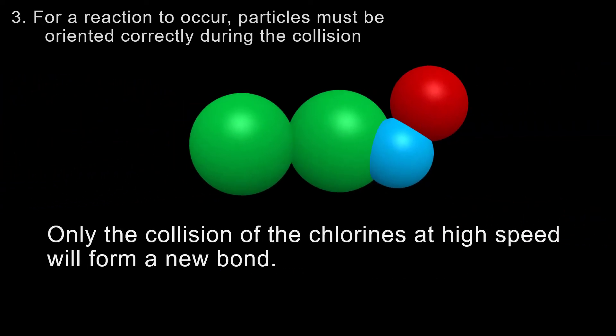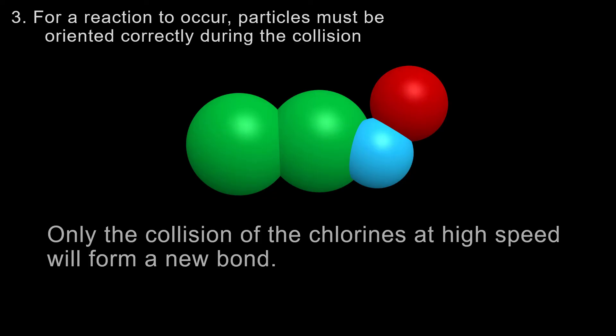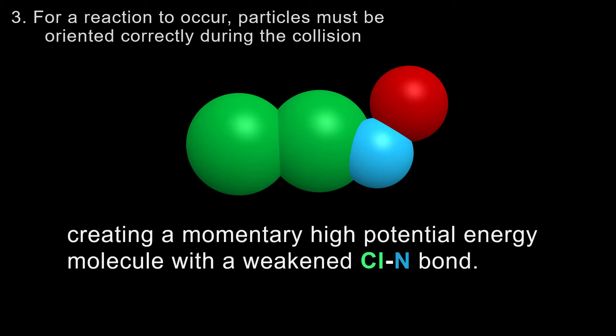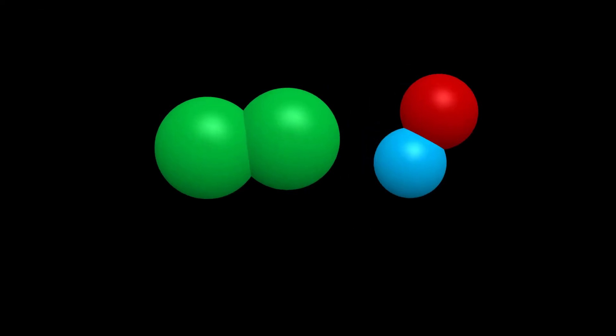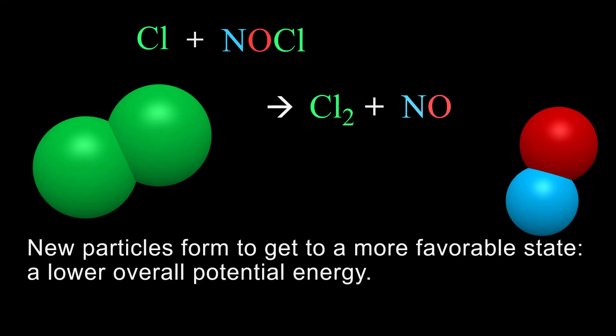Only the collisions of the chlorines at high speed will form a new bond, creating a momentary high potential energy molecule with a weakened chlorine-nitrogen bond, resulting in new particles forming to get to a lower overall potential energy.